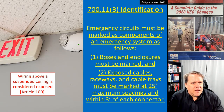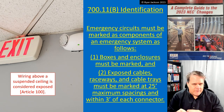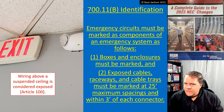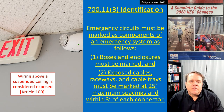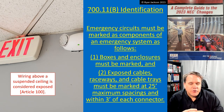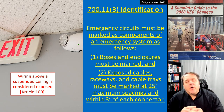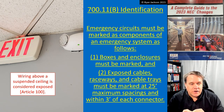Subsection B covers identification. Emergency circuits must be marked as components of an emergency system. Boxes and enclosures must be marked so we know it's an emergency circuit. Number two: exposed cables, raceways, and cable trays must be marked at 25-foot maximum spacings and within three feet of each connector.